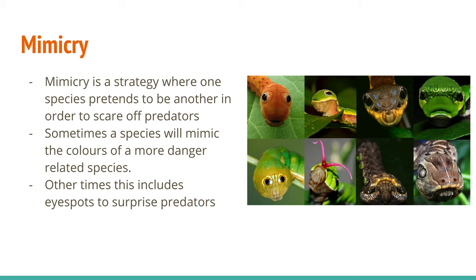Mimicry is another strategy. In mimicry, one organism tries to look like another organism. Sometimes this can be as simple as evolving a pattern that looks similar to another species that is poisonous. A good example is the monarch butterfly and the viceroy butterfly. Monarch butterflies are slightly poisonous and taste very bad to birds, with a distinctive orange and black pattern on their wings. Viceroy butterflies have evolved a very similar pattern, because birds have learned to avoid that coloring — but viceroys are not actually poisonous.